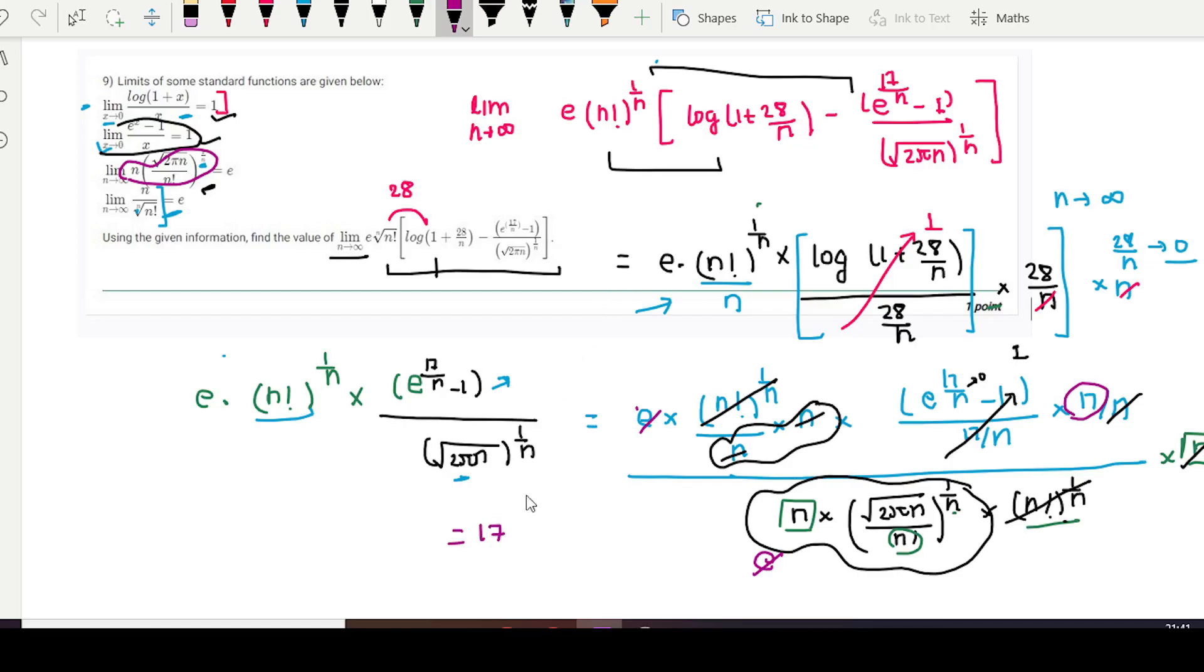Since that is subtraction operation is going here, so we will subtract 28 minus 17, so it will give 11 here. So the value of the limit of this whole equation, it will give 11. Thank you.